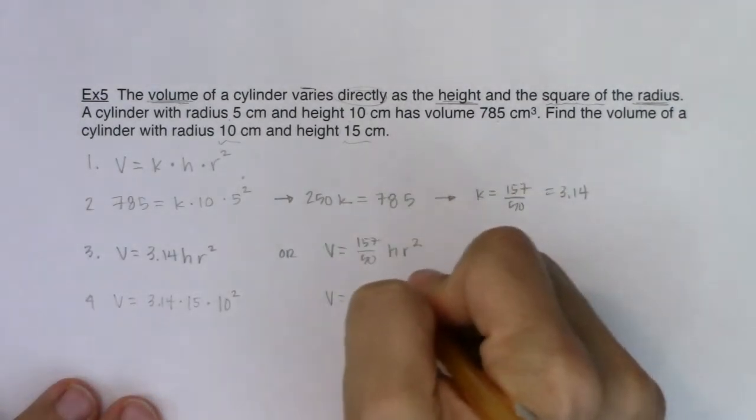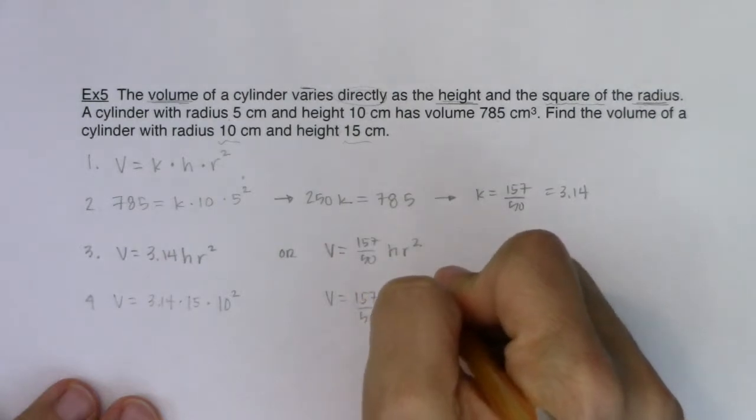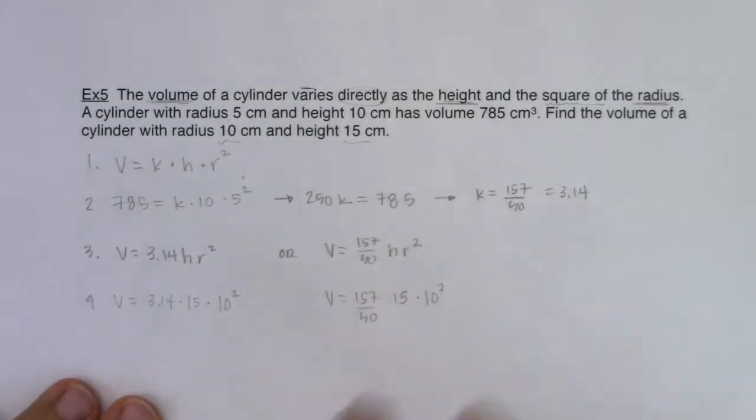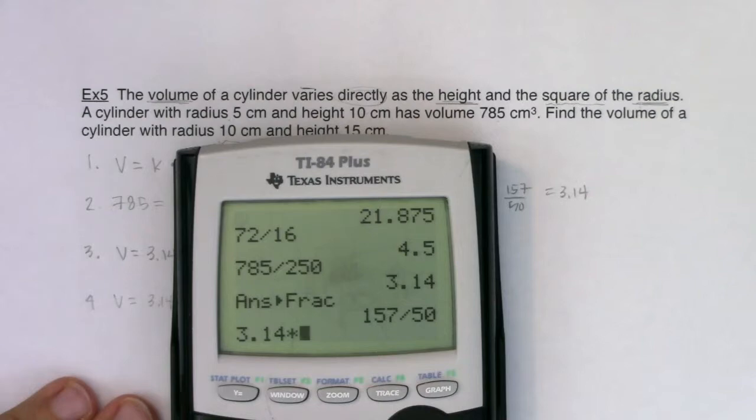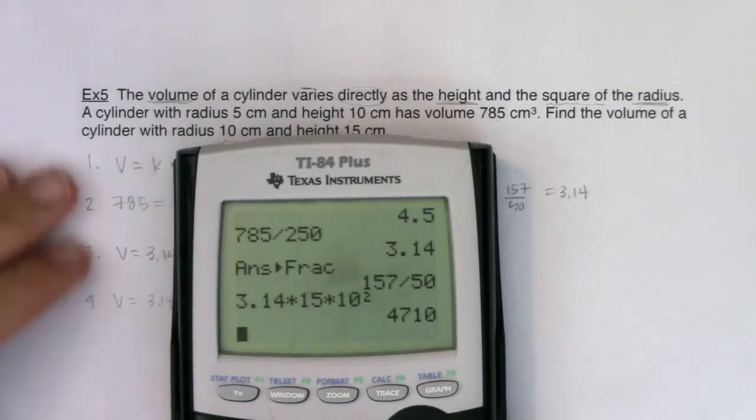Here I would do the same thing, but I would have my fraction. The height was 15, the radius was 10. I'm not going to forget to square it. So when we crunch these, let's do 3.14 times 15 times 10 squared. It looks like we're getting 4710.